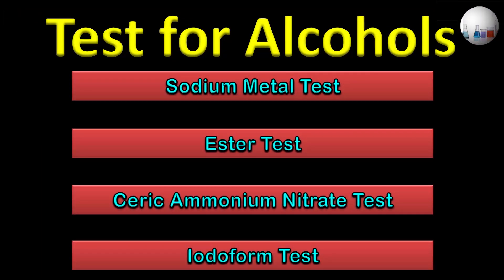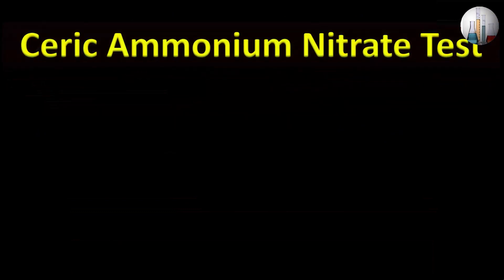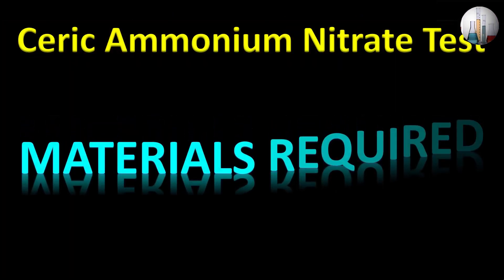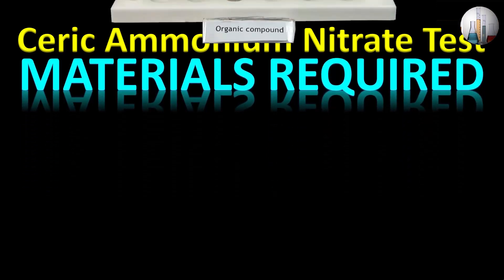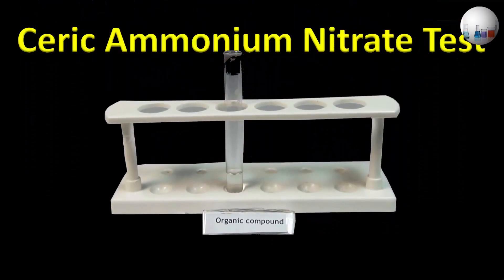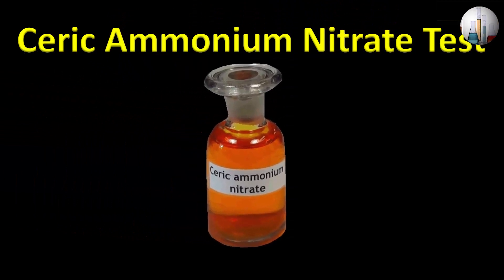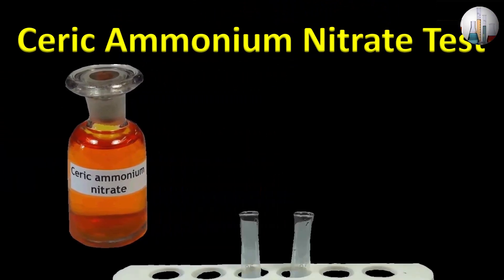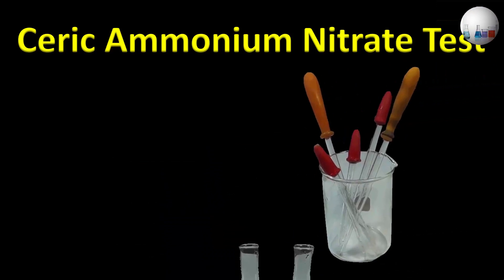The next test is the ceric ammonium nitrate test. Materials required: organic compound, ceric ammonium nitrate reagent, test tubes, and a dropper.